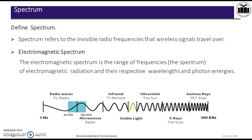Let us start with the definition of spectrum. The spectrum refers to the invisible radio frequencies that wireless signals travel over. The electromagnetic spectrum is the range of frequencies of electromagnetic radiation and their respective wavelengths and photon energy.